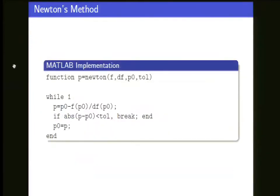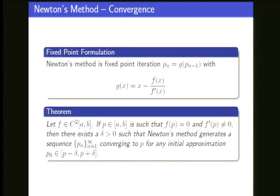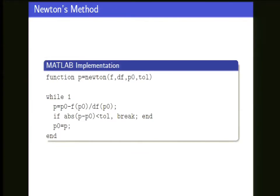Let's recap everything about Newton. You knew Newton's method before. Writing a MATLAB implementation is not even very interesting — in fact, you should write your own. Usually when you need it, a generic function doesn't help much. It's really just one line: the new P equals the old P minus F of the old P divided by F prime of the old P.